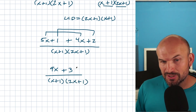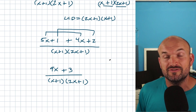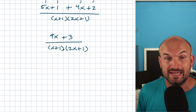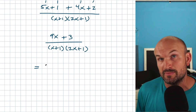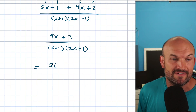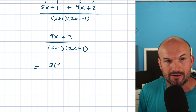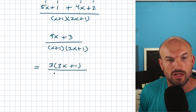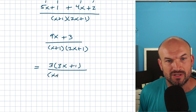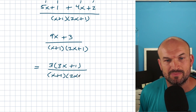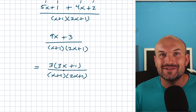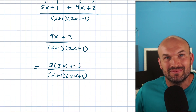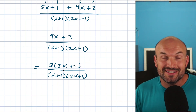You could simplify this example a little bit — you could factor out a three in the numerator. So another simplified version would be three times 3X plus one, all over X plus one times 2X plus one. If your teacher wants you to provide it in simplified form, that can be very helpful.